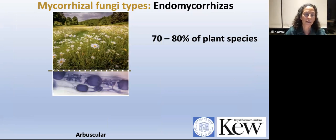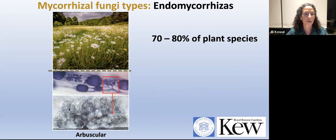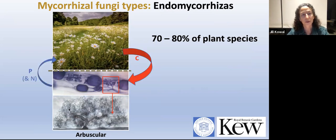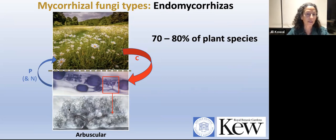Next, the endomycorrhizals. The most common type are the arbuscular mycorrhizals — called arbuscular because they have tree-like arbuscule structures inside the cell, which is where the exchange of nutrients is thought to occur. This nutritional mutualism focuses more on phosphorus, though nitrogen transfer is also seen in many experimental systems. The fungi receive carbon from the plants in return.